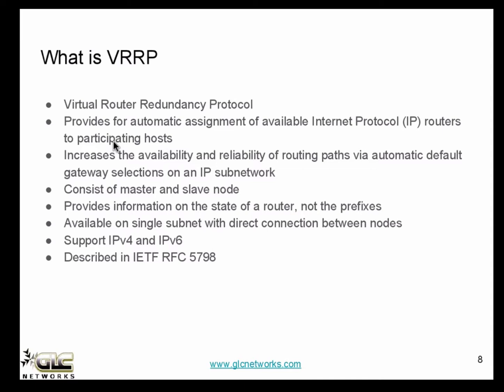If you have a VRRP setup with more than one router, the idea is: if one router goes down, the traffic will be taken over by the healthy routers. By doing so we increase the availability and reliability of routing via automatic default gateway selection on an IP sub-network. As a consequence, VRRP consists of minimum two nodes: the master and the slave.